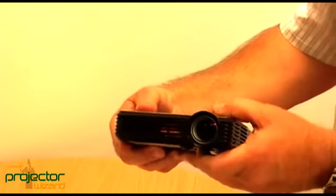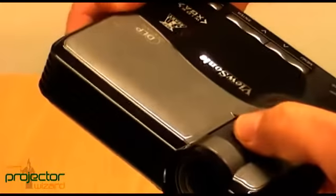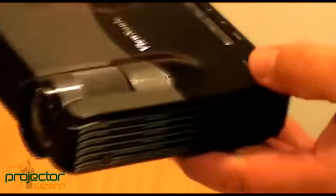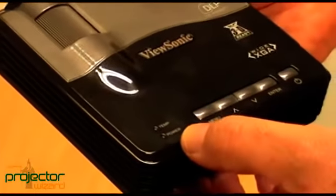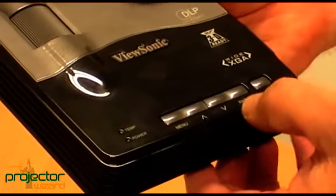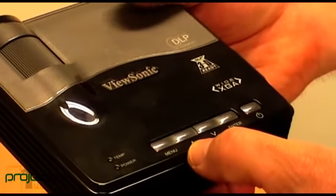Nothing on the left hand side and on the front we have the lens and the focus ring which is on top. It's quite easy to use so I quite like that. On the top we've got a little LED light for temperature and power. On, off, enter, menu and up and down for your navigation.